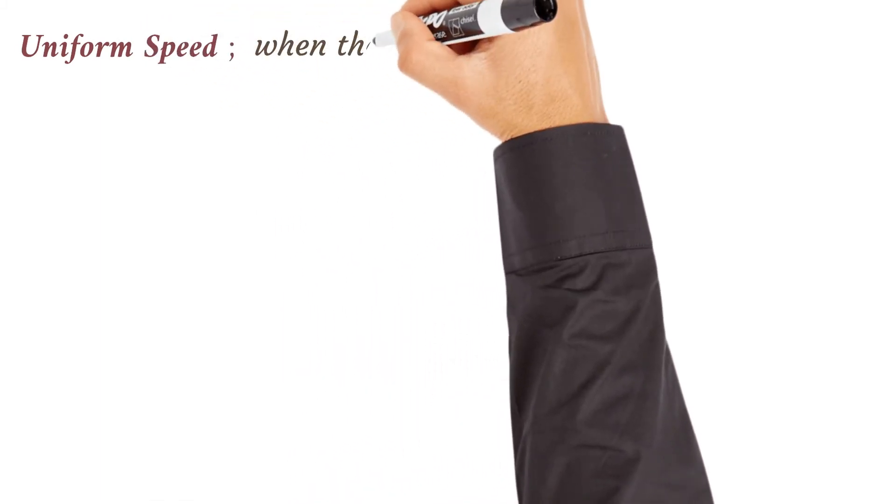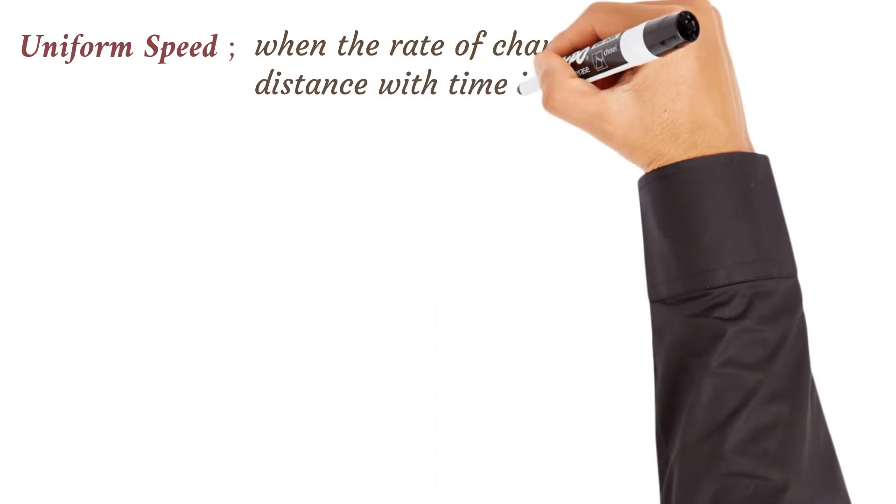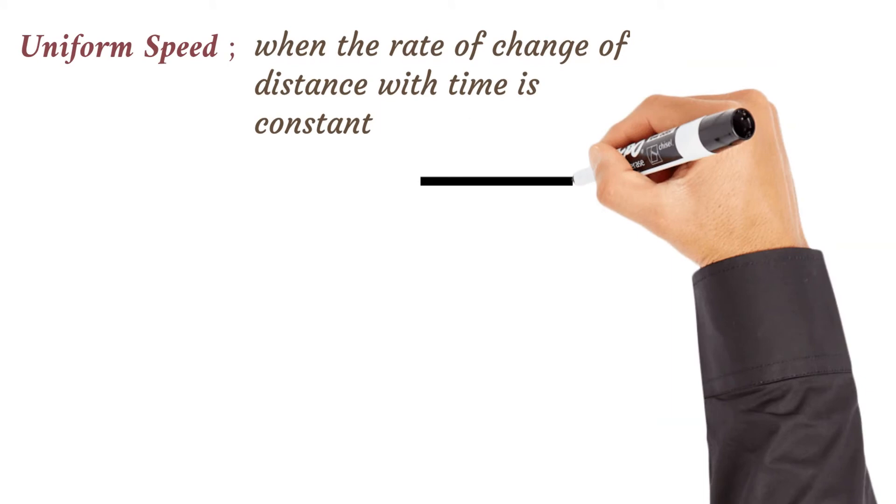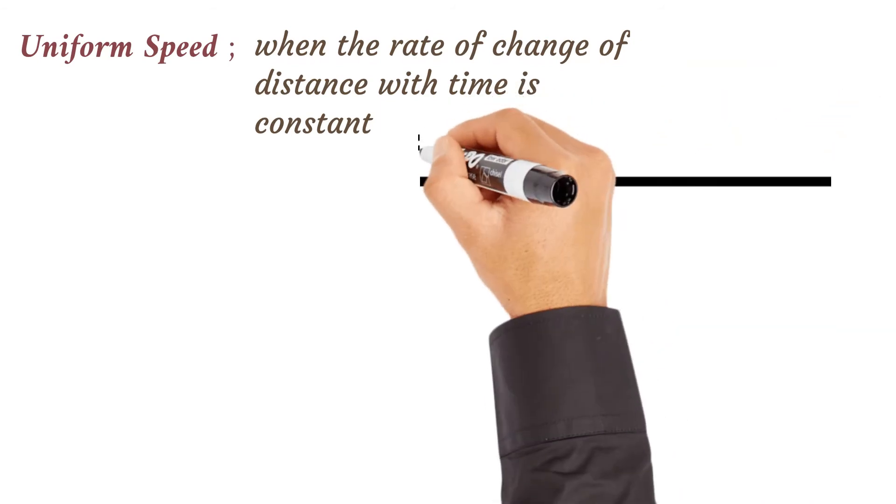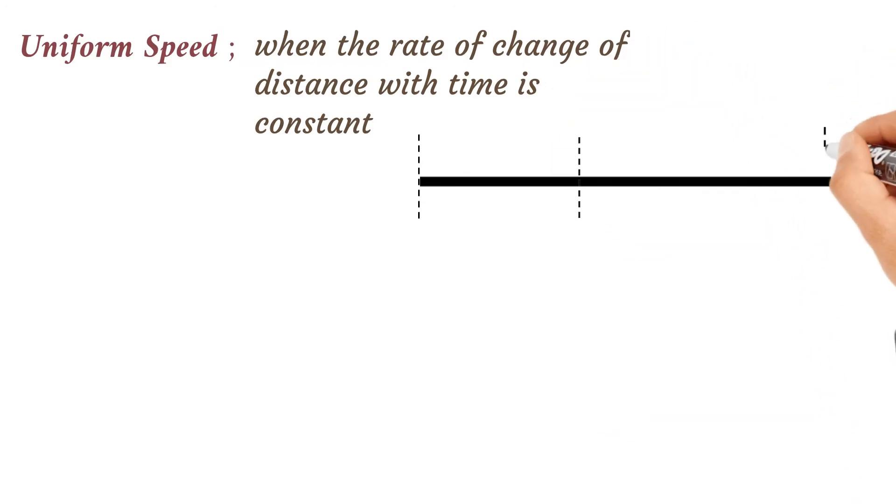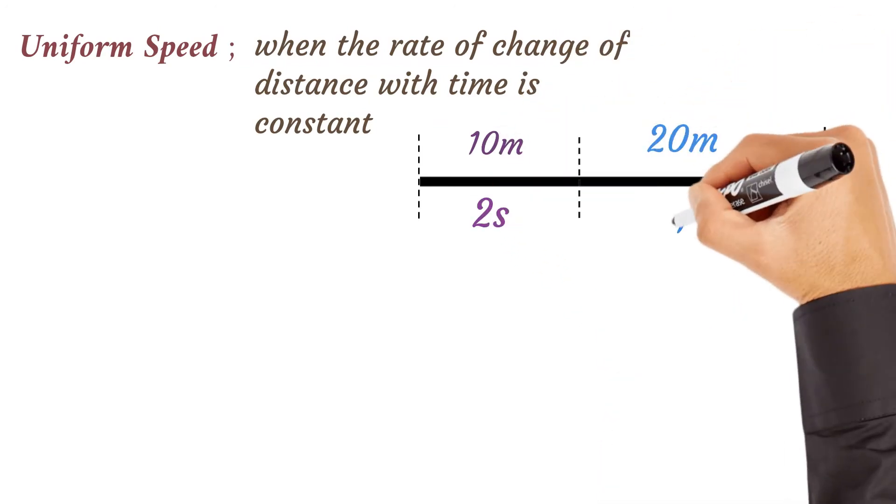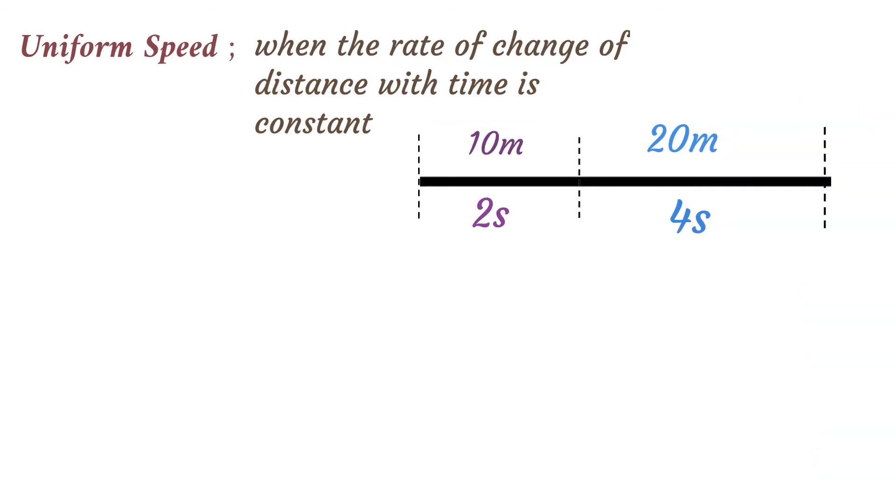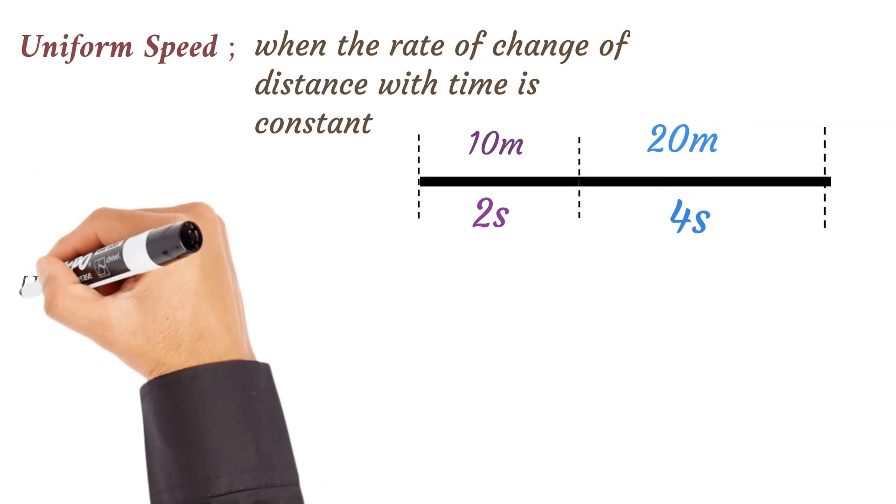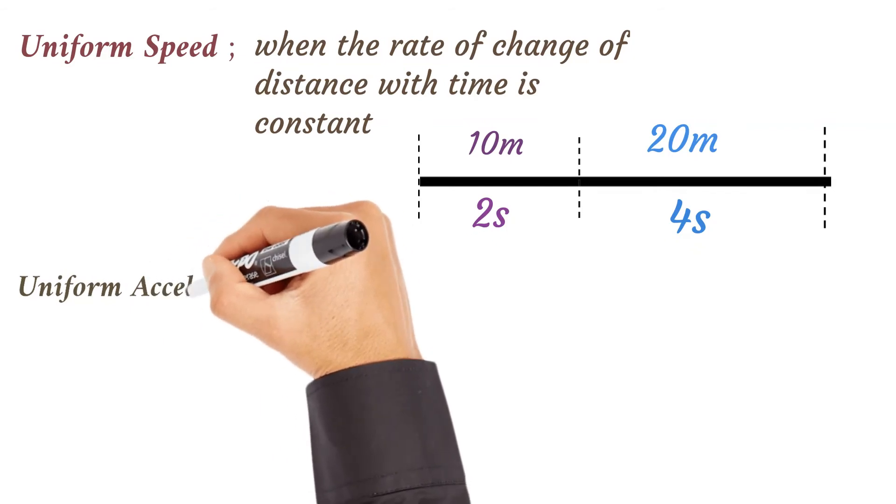Next point to note: uniform speed is when the rate of change of distance with time is constant. Let's consider two different journeys. The first one, the body moves 10 meters in 2 seconds and 20 meters in 4 seconds. If you divide 10 by 2 we have 5, if you divide 20 by 4 we have 5 also. So in the two journeys the speed is the same, uniform.